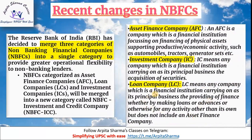RBI has defined three categories of NBFCs: Asset Finance Companies (AFCs), which focus on financing physical assets supporting productive economic activity such as automobiles, tractors, and generators; Investment Companies, whose principal business is acquisition of securities; and Loan Companies, which provide loans and advances as their principal business but do not include asset finance companies. These three categories have been combined and merged to create one new category: NBFC - Investment and Credit Company (NBFC-ICC).